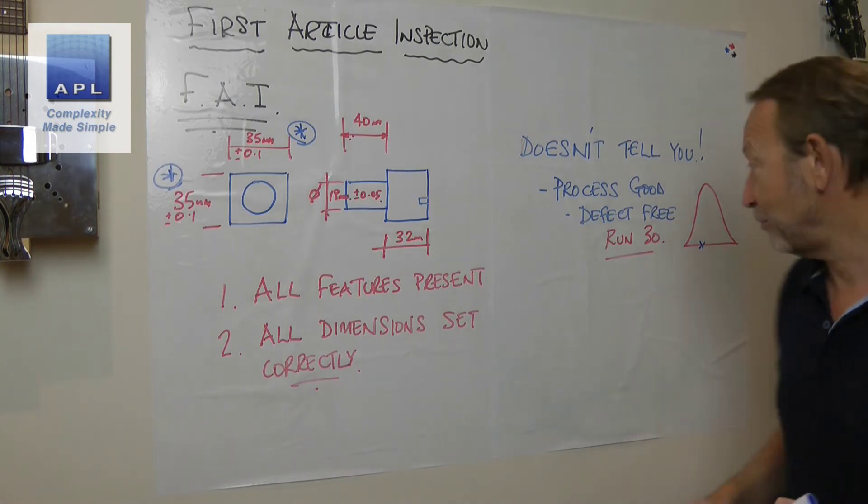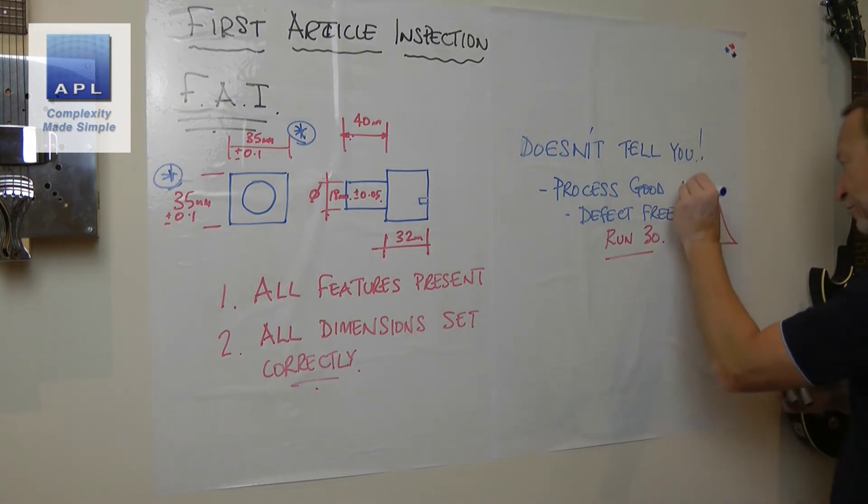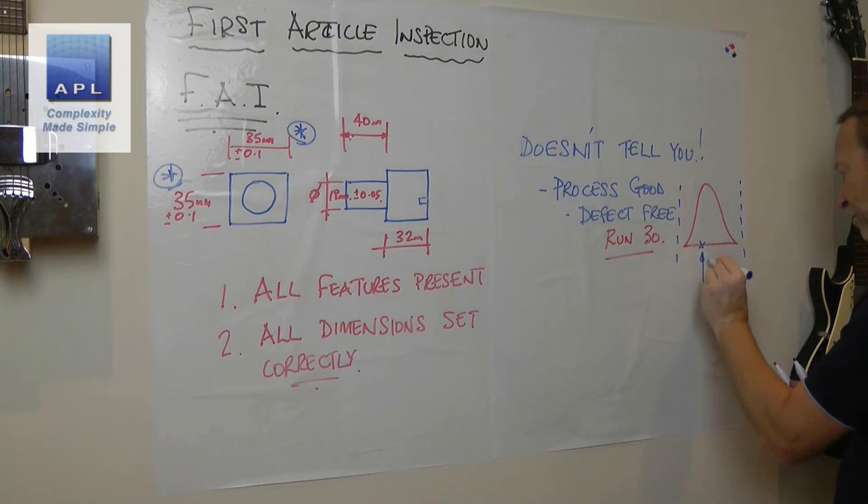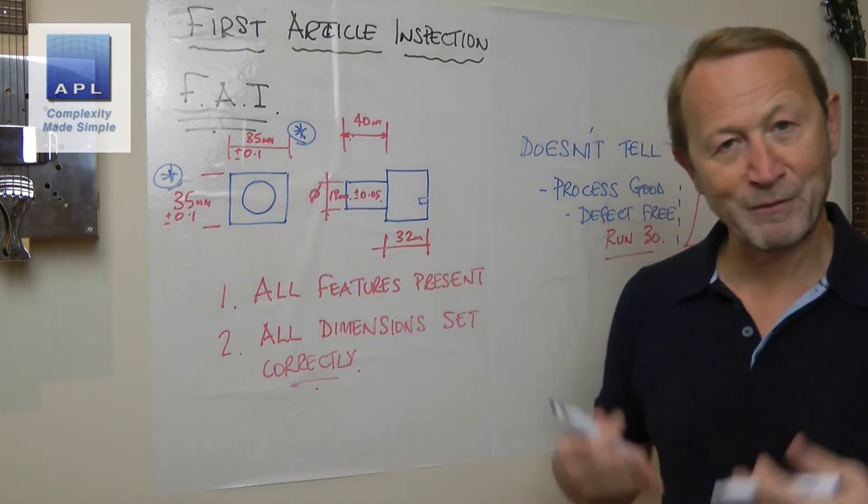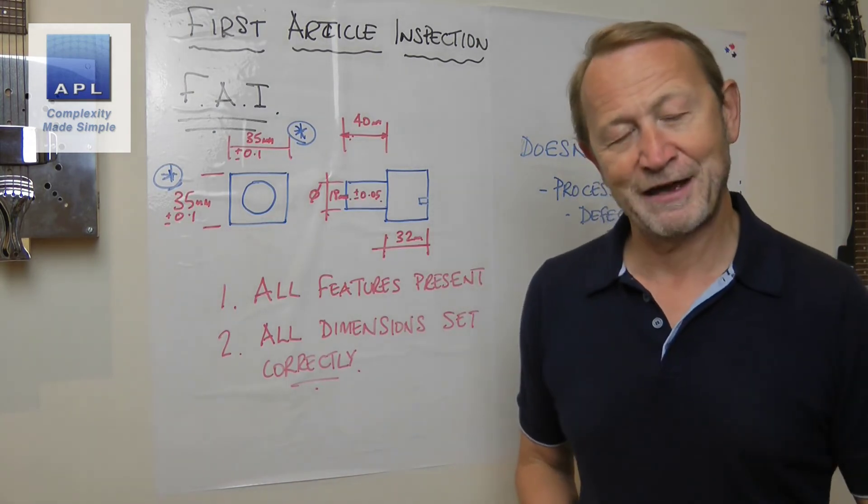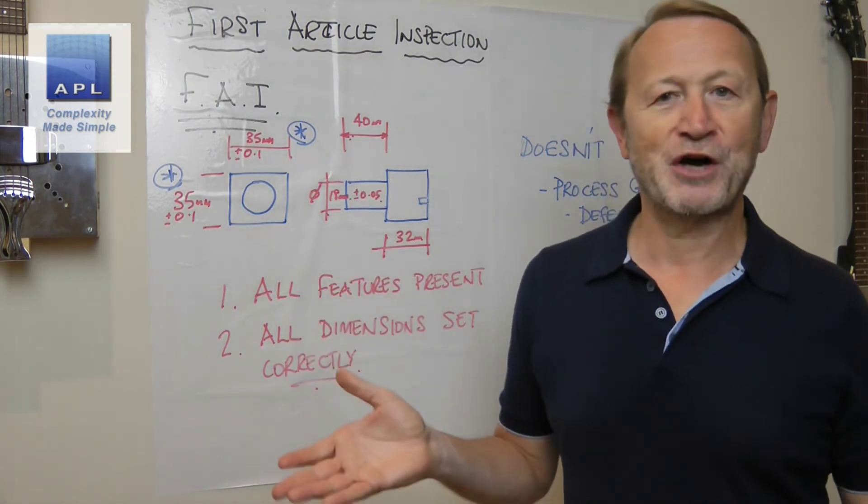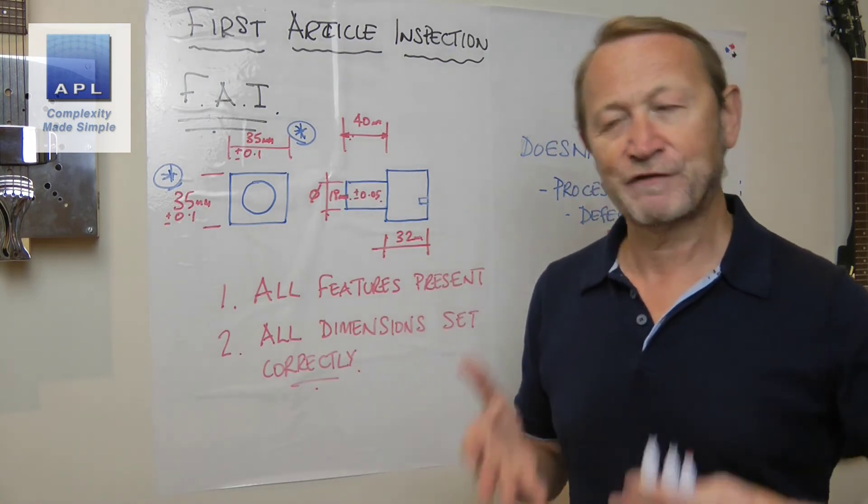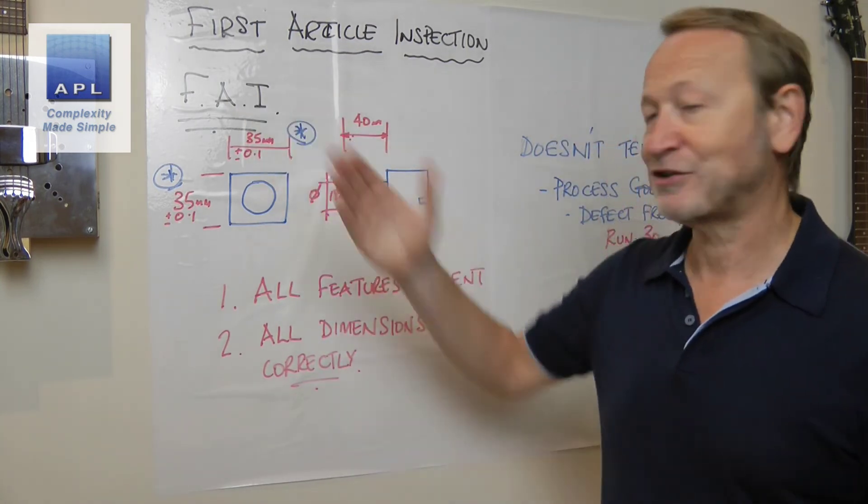All you've done with the First Article is you're taking one data point. Hopefully, if your tolerances look like this, your first article data point is going to fall inside the tolerances. You're in the ballpark, all the features are present, that little nick there you haven't forgot to put in there, everything's pretty much okay as a setup. You've set it up correctly. That's it.